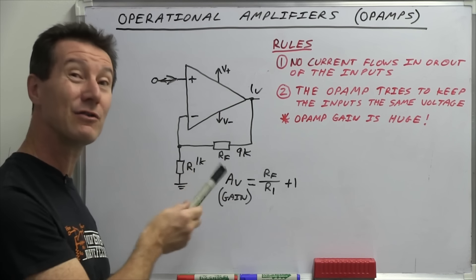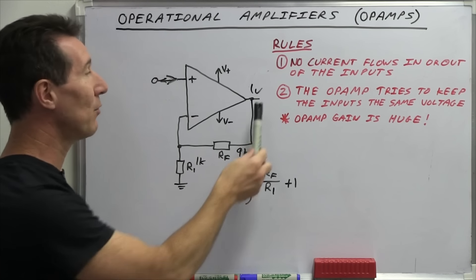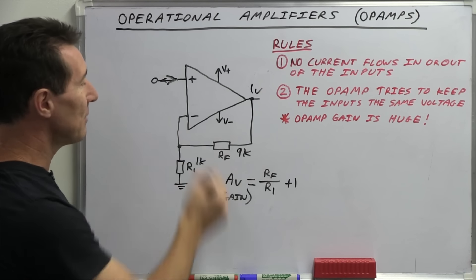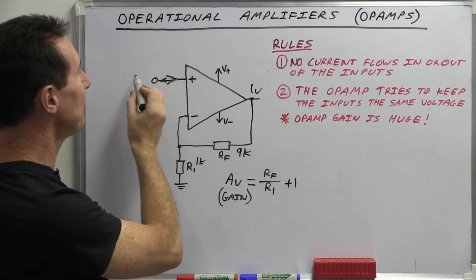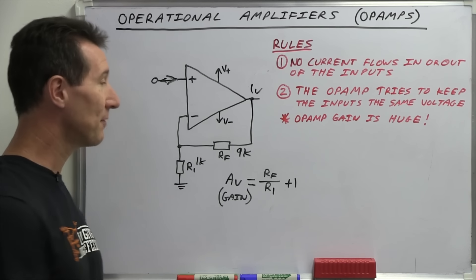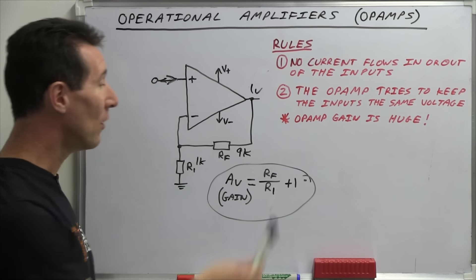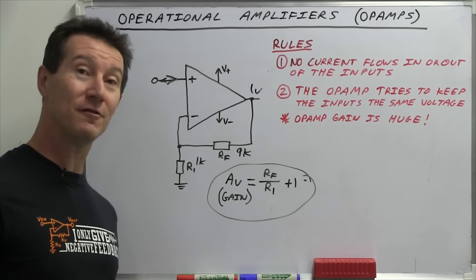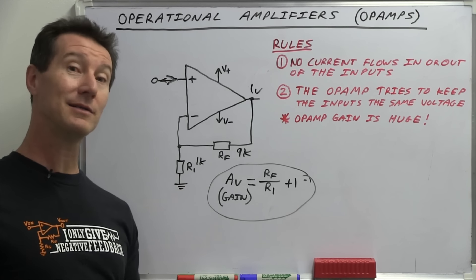And because we've got positive and negative rails, we can feed AC or DC signals into here about ground. We can feed negative 1 volt in and get negative 10 volts out. That is the basic configuration of a non-inverting amplifier. And from this formula, you can also see why our buffer amplifier had a gain of 1 — because our feedback resistor is 0 ohm, and R1 was infinite. So 0 over infinity is 0, plus 1 — gain is 1. That's why our buffer had a gain of 1. The math doesn't lie.